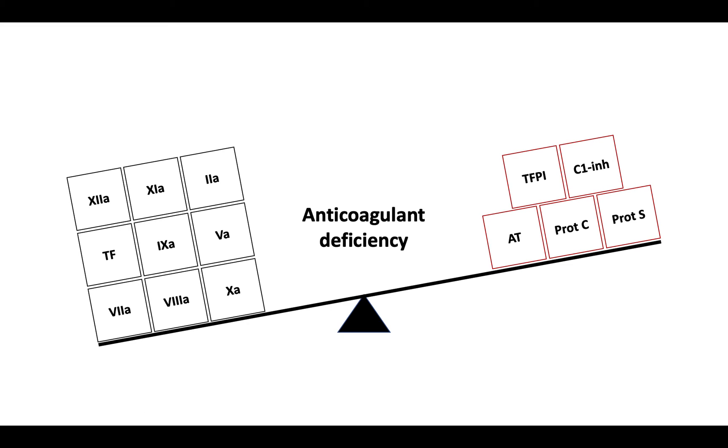This imbalance can also be caused by anticoagulant deficiencies, as can be seen with antithrombin deficiency, protein C deficiency, and protein S deficiency.